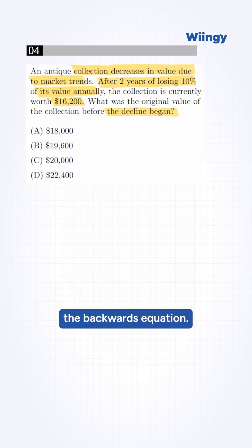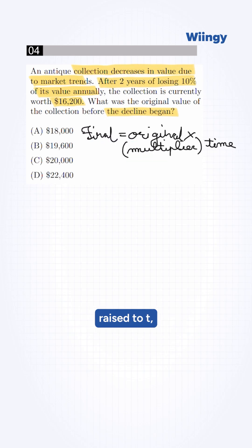So we need to set up the backwards equation. The formula is basically: final equals original into multiplier raised to t, which is time.